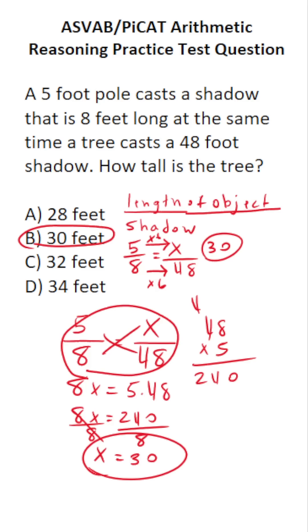You could do the cross multiplication, or you can think of the proportion like a scale problem. Once you understand that a scale factor of 6 gets you from 8 to 48, you could just multiply 5 times 6 to get 30 as well.